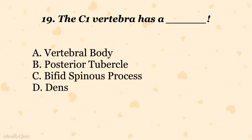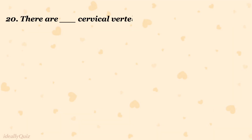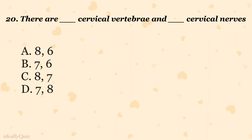The C1 vertebra has a: A. Vertebral body, B. Posterior tubercle, C. Bifid spinous process, D. Dens. The correct answer is B. Posterior tubercle.